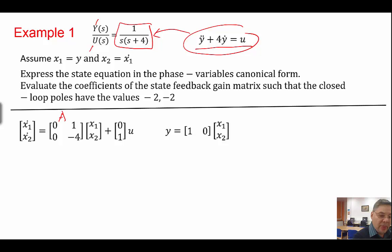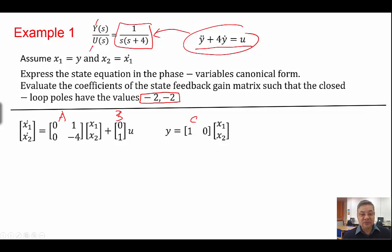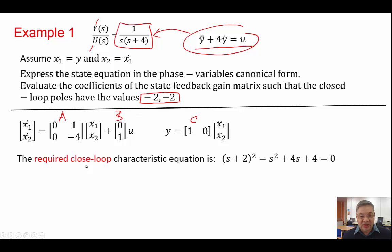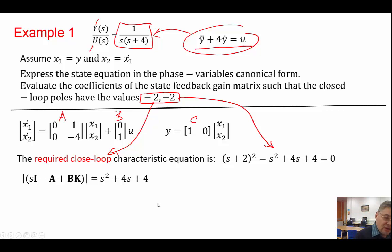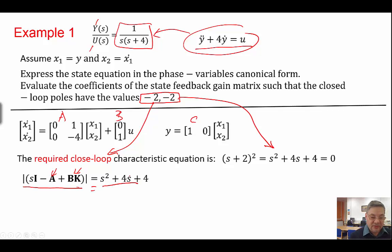This is A, X-dot equals AX plus BU, and this is the C matrix. I would like to place the closed-loop poles at minus 2 and minus 2. For this case, place is not going to work, but you can use the Ackermann command. We are going to do it analytically.